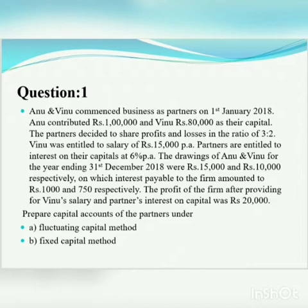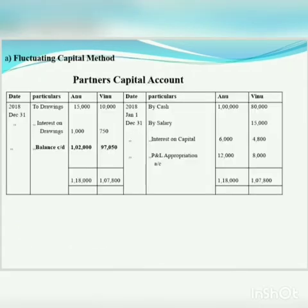Prepare the capital account of the partners under fluctuating capital method and fixed capital method. Under the fluctuating capital method, all details — capital balance, interest on capital, interest on drawings, salary, and profit — are recorded in the capital account. Under the fixed capital method, there are two accounts: the capital account and the current account. First, we will prepare the capital account under the fluctuating capital method.